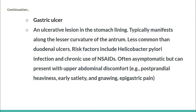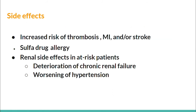A gastric ulcer is an ulcerative lesion in the stomach lining, typically along the lesser curvature of the antrum, less common than duodenal ulcers. Risk factors include Helicobacter pylori infection and chronic NSAID use. It is often asymptomatic but can present with upper abdominal discomfort, post-prandial heaviness, early satiety, and gnawing epigastric pain. Side effects of selective COX-2 inhibitors include increased risk of thrombosis, MI, or stroke, sulfa drug allergy, and renal side effects including deterioration of chronic renal failure and worsening of hypertension.